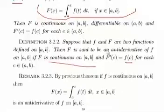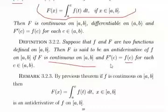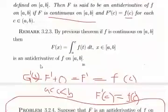This is the definition of an antiderivative: capital F is said to be an antiderivative of lowercase f on the closed interval [a, b] if uppercase F is continuous on the closed interval, and if you take the derivative of uppercase F it turns out to be lowercase f for each element in the open interval.